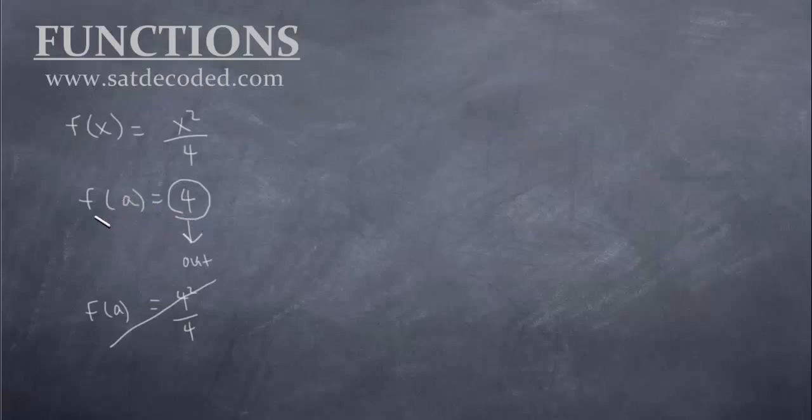So let's really think about this question. What is the input then? If it's not 4, then it has to be a. Remember, the inputs are whatever is inside the parentheses. You can remember inputs that way. Inputs, inside, they both have in. So a is inside the parentheses and it is replacing the x. So just remember x equals a, which in this case is the input.